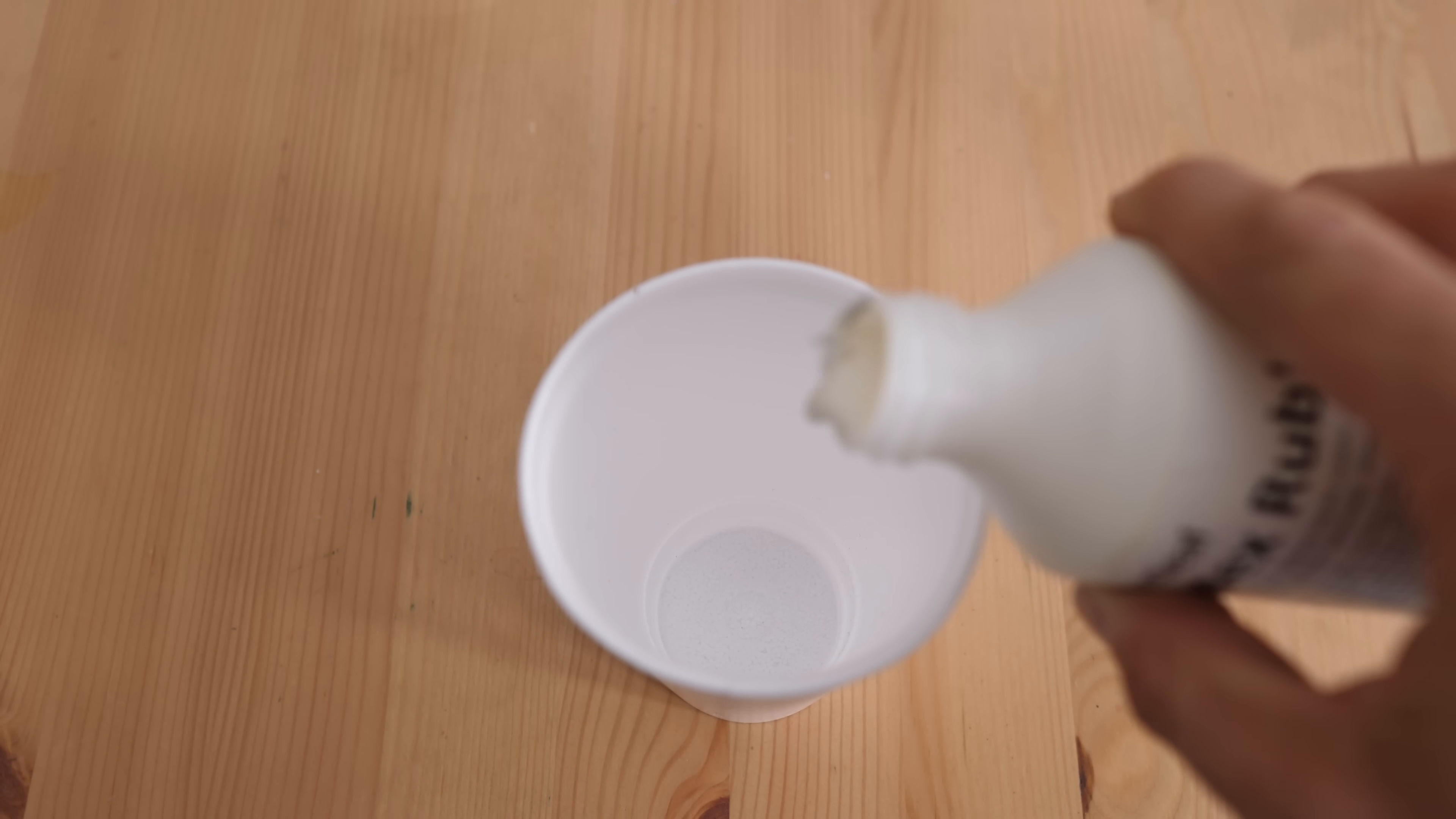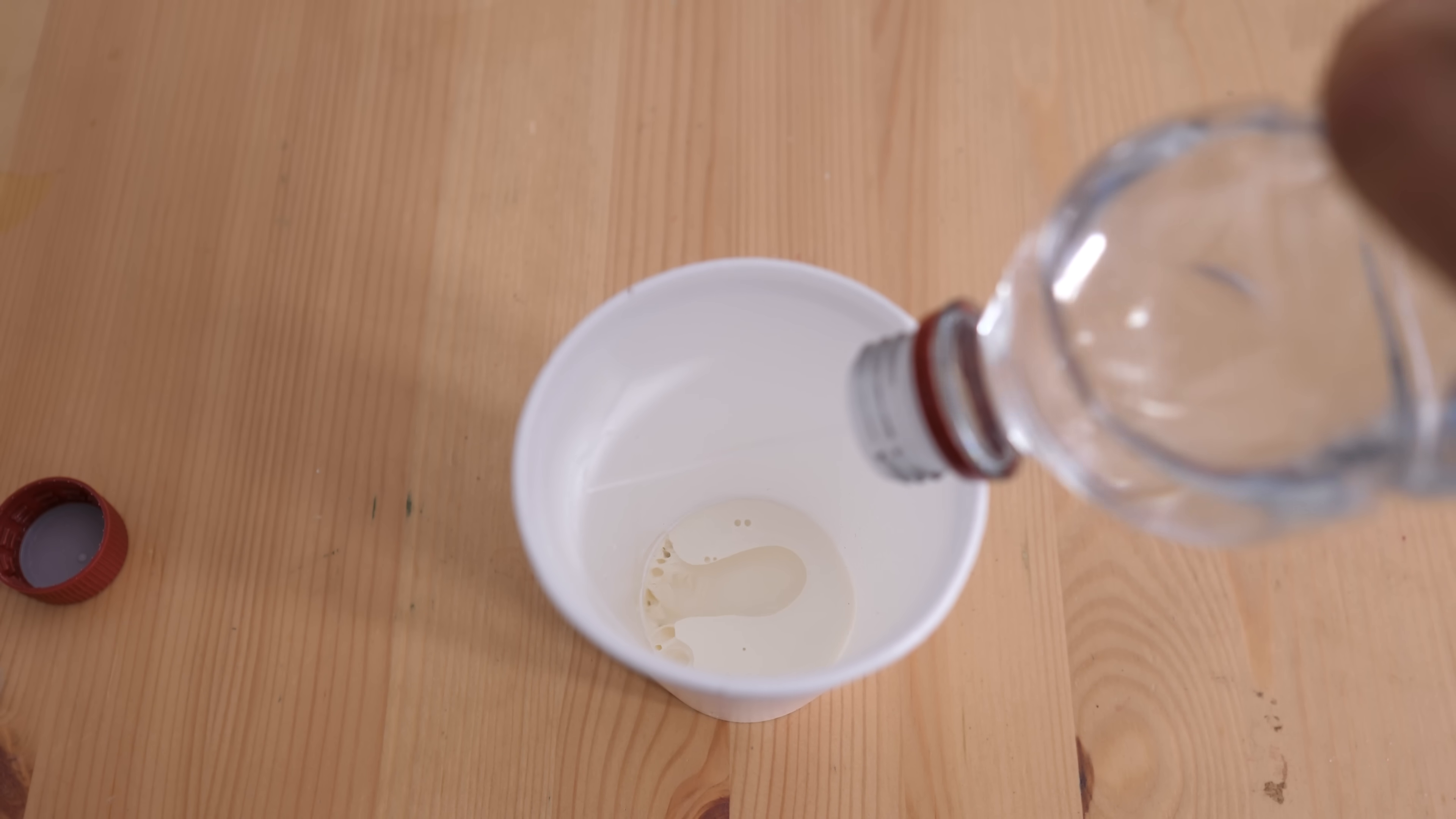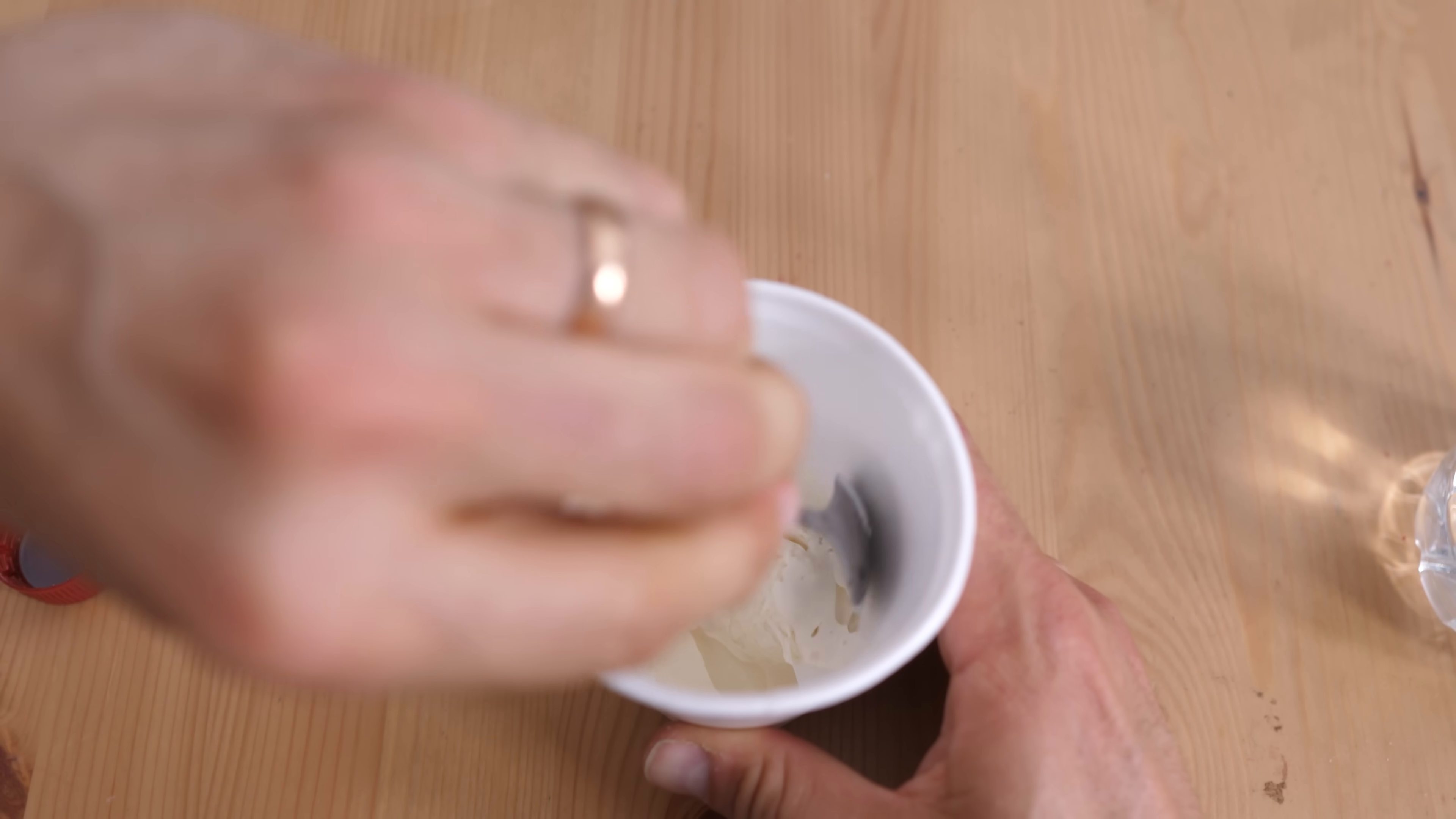For example I've got this liquid latex here. It's liquid because the individual polymer chains are able to slide over each other. But I can cause cross-links to form between these separate chains by changing the pH. So by adding vinegar for example I turn this liquid latex into a bouncy ball.